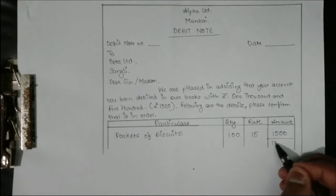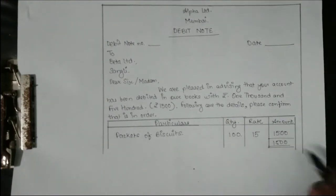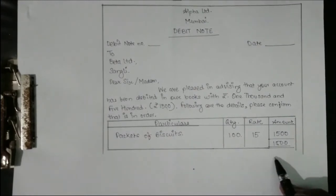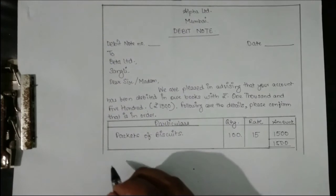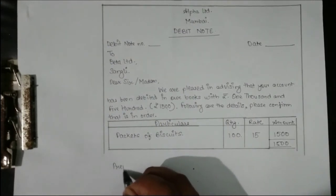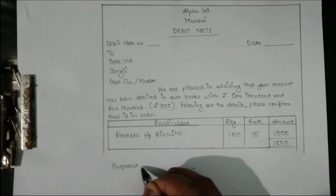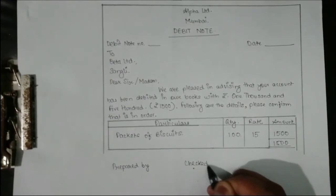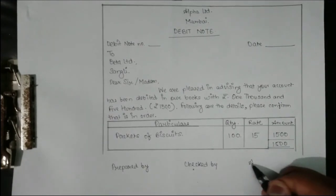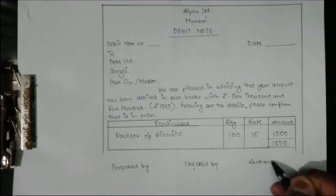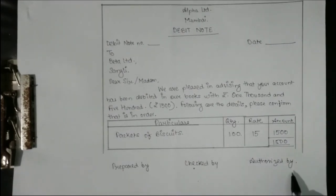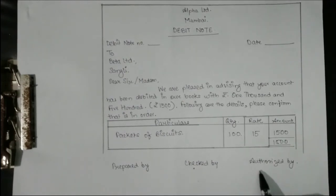The total comes to 1,500 and we close the table. The debit note is then signed by three people: Prepared By, Checked By, and Authorized By — similar to a voucher. Note that the receiver does not sign this document.